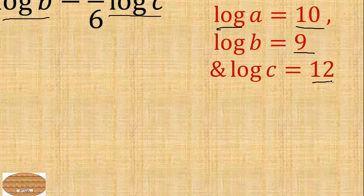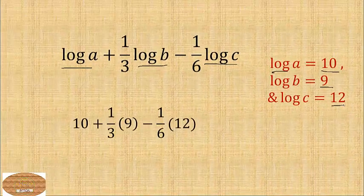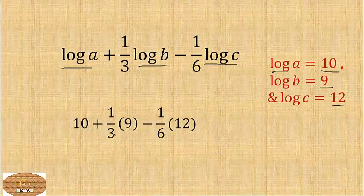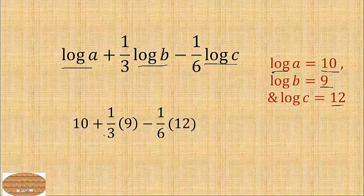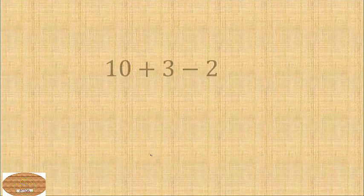Okay, all right. So let's move on. All right, so you can do a cancellation here. So 3 here, 3 here, 6 here, 2. So we have 10 plus 3 minus 2. All right, 10 plus 3 minus 2.